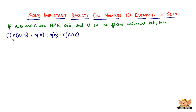The first result: the number of elements in A union B — N of A union B — equals N of A plus N of B minus N of A intersection B.